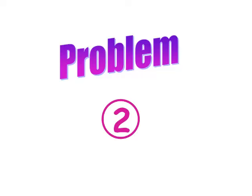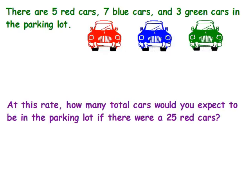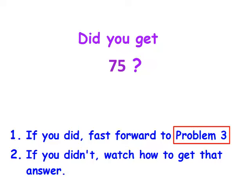Now we're going to do problem 2. There are 5 red cars, 7 blue cars, and 3 green cars in the parking lot. At this rate, how many total cars would you expect to be in the parking lot if there were 25 red cars? I want you to pause the video and see if you can solve this one by yourself. Did you get 75? If you didn't, then we're going to solve it together. But if you did, you can fast forward to problem 3.